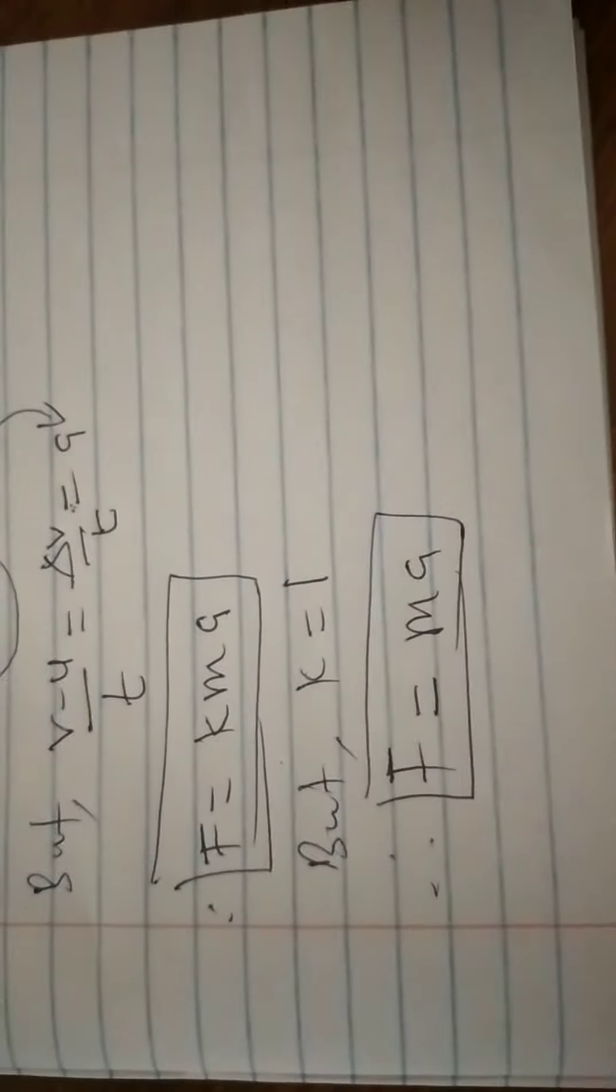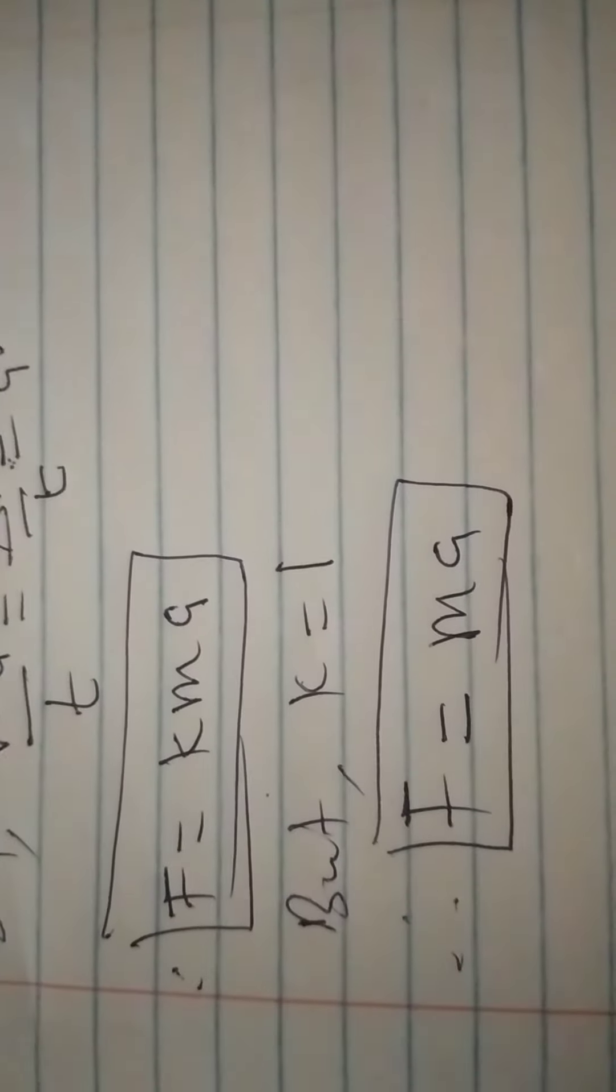So to show that force is equal to mass times acceleration, we have to start with stating Newton's second law of motion and then manipulating the equation and finding your acceleration so that you finally arrive at this answer.